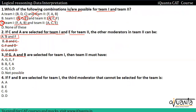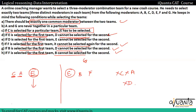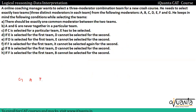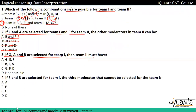If G, A, and B are selected for team 1, then what must team 2 have? Here it is directly given: A and G are never together in a particular team. So G and A together is not possible. The direct answer is option number D. Simple reason why I included this question — to show that you should always try to read questions carefully in this type of set.